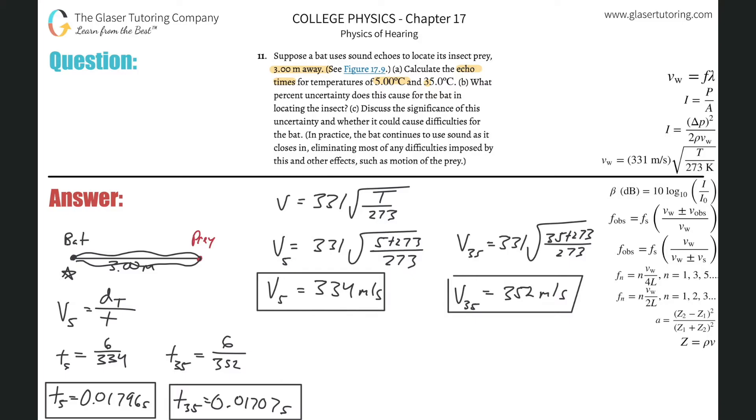Now, letter B. It says, what percent uncertainty does this cause for the bat in locating the insect? Well, there's basically a variation between these two numbers. There's a couple of ways to possibly calculate this. I think what might be appropriate is to take an average first, because we know that the time at 5 and the time at 35, the temperature is going to fluctuate between that. And to find that percent uncertainty, I need to find an average more or less. The problem is that there's a few ways to calculate it. So let's just find the average time first.